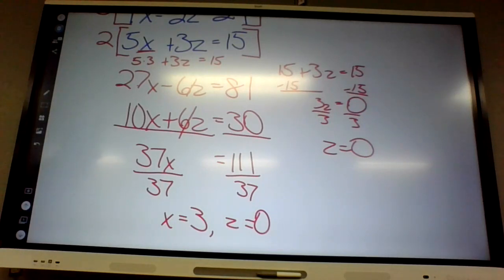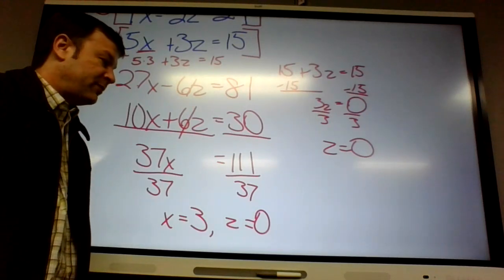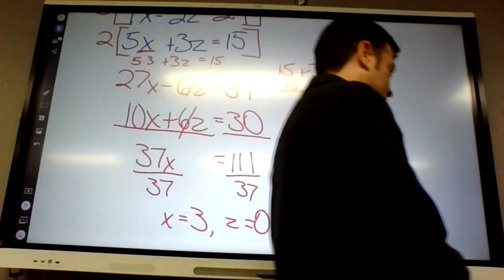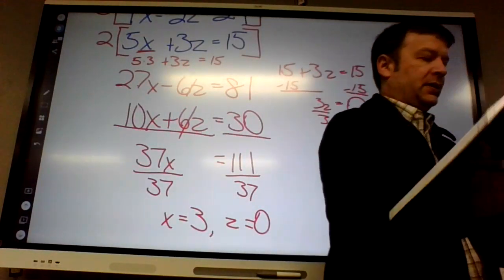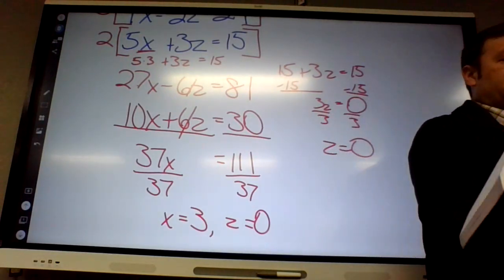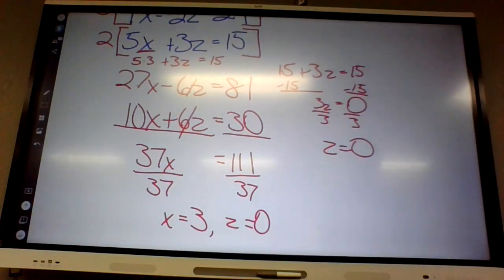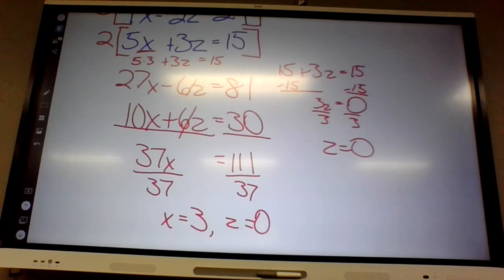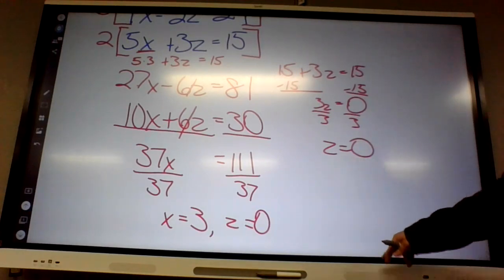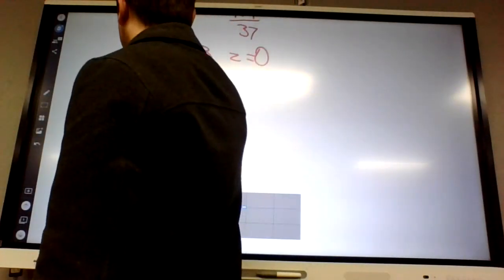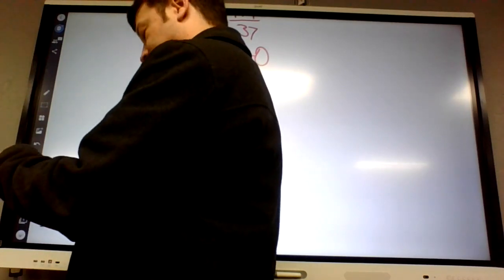On number 15, what's the easiest method — graphing, substitution, or elimination? Substitution, because it already has n equals. You could do elimination, but you'd have to move terms. Graphing is never the easiest, by the way. Let's finish with 18, because sometimes weird stuff happens.